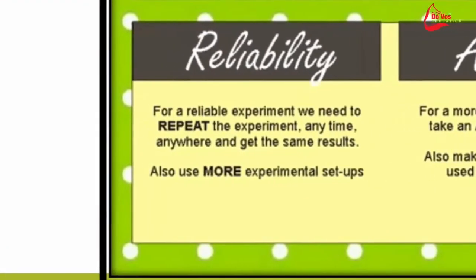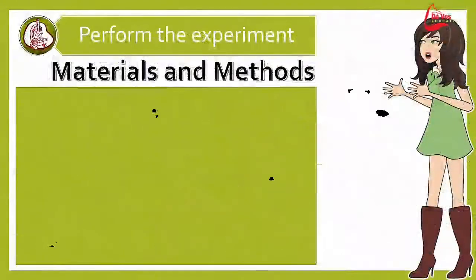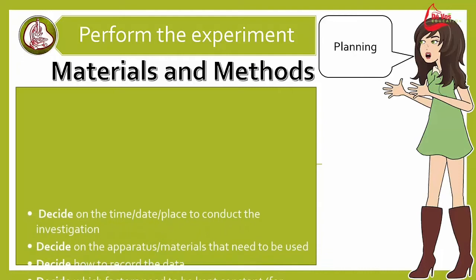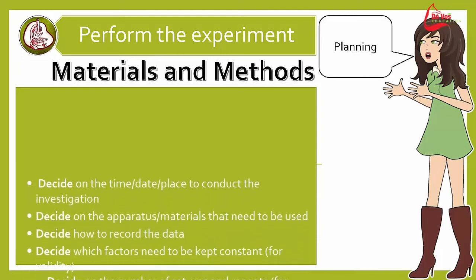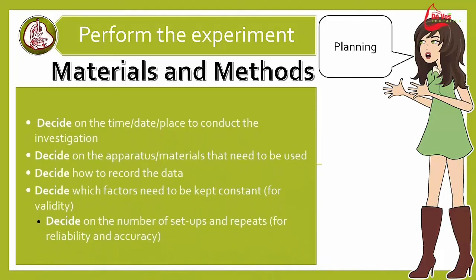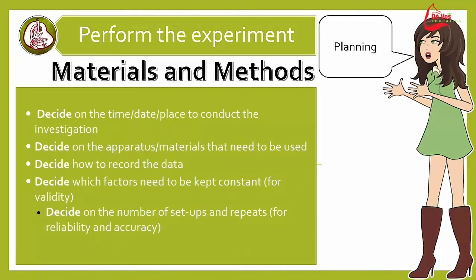And lastly, in order to make sure that the experiment is reliable, we need to repeat the experiment anytime, anywhere, or have more setups. Planning your method is just as important as everything else. First, you need to decide on the time and the date and the place where you need to conduct your investigation. Decide on your apparatus and materials that you need. Decide how you are going to record your data.